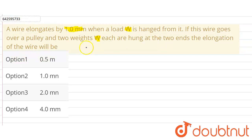In the given question, we have been told that the wire elongates by 1 mm when the load of W is hanged from it. So let us suppose this is a wire where a load of W is hanged from it. This is the load W. When the W load is hanged from the wire attached with the ceiling, a load of W is acting on this point.